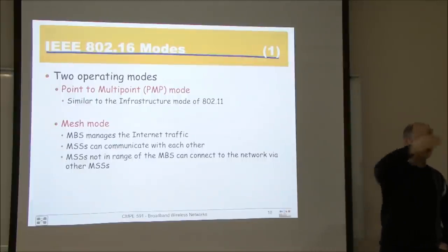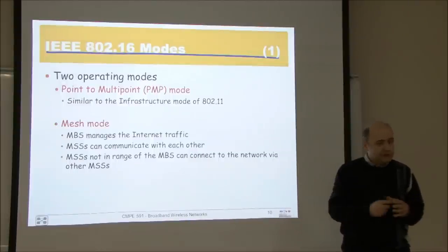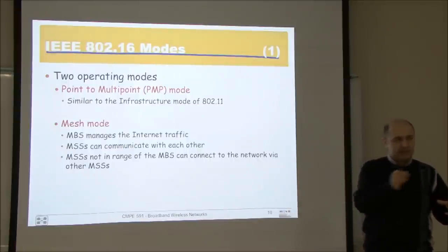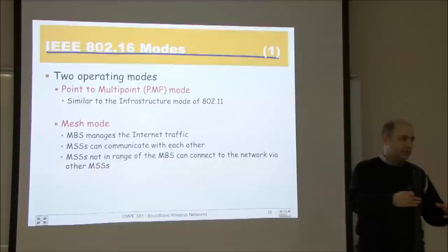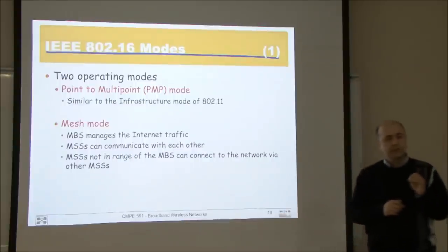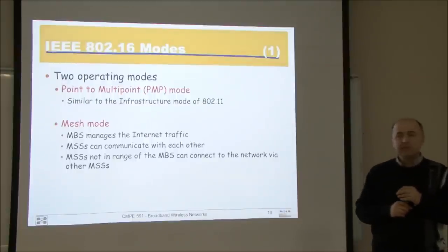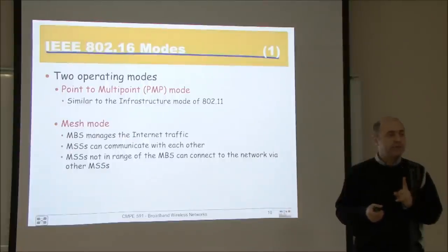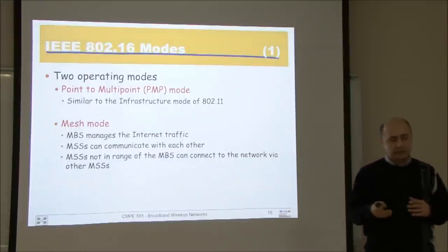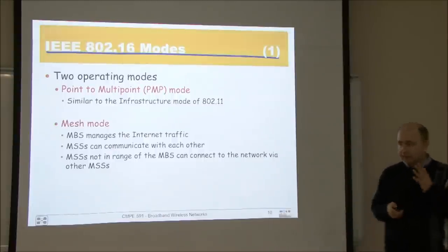In Mesh mode, if a subscriber station is not in range of the base station, it can talk to another subscriber station that is in range, and over that reach the base station to go to the internet or PSTN. You can even have more hops. Mesh mode allows extending the cell coverage in that sense. But this Mesh mode is slightly different than the regular wireless mesh — typically when we say mesh, we mean there's no base station. In WiMAX, you still need the base station because it is organizing the cell. It works as an orchestrator — you talk directly with your neighbor, but the base station tells you when you can do that.